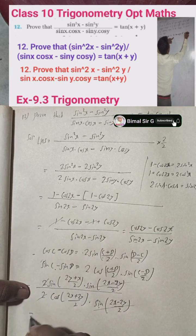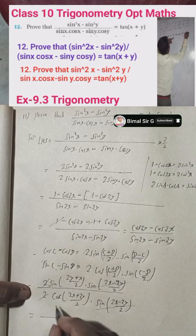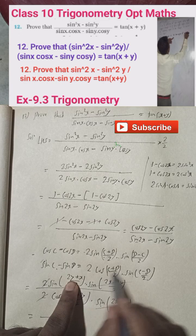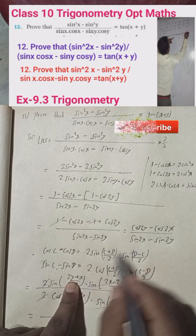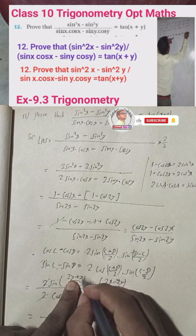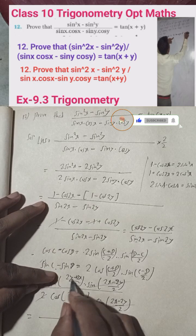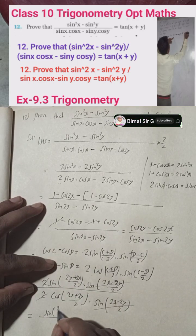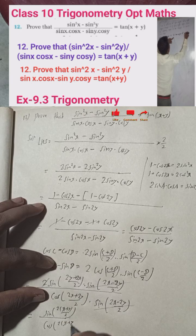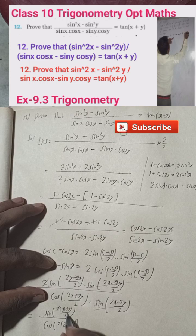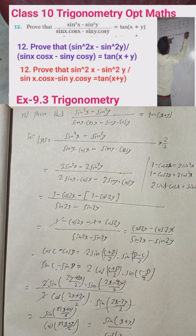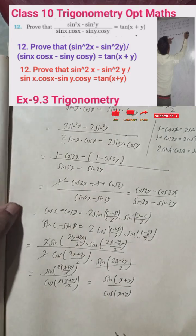Now we can cancel common factors. The 2 in numerator and 2 in denominator cancel. The sin((2x−2y)/2) term also cancels from both numerator and denominator. We are left with sin((2x+2y)/2) over cos((2x+2y)/2), which simplifies to sin(x+y) over cos(x+y).